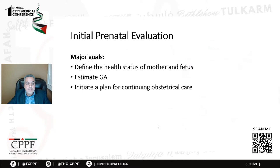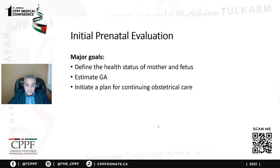The goal of the initial pregnancy evaluation is to define the health status of the mother and the fetus. We need to know if the mother and baby are healthy, accurately estimate the gestational age, and put a plan for continuing obstetrical care. History taking is very important. In addition to past medical history, surgical history, and allergic history, we should also take a detailed obstetrical history and menstrual history to accurately date the stage of pregnancy.